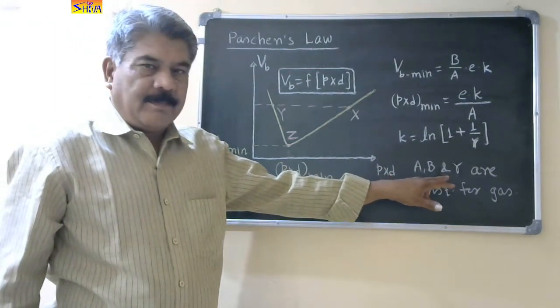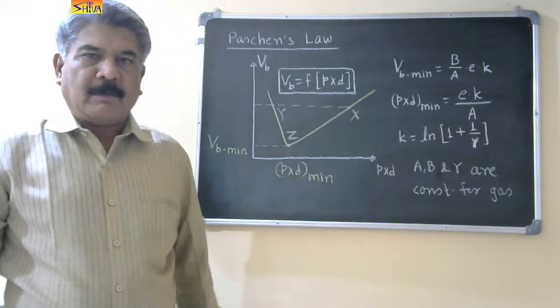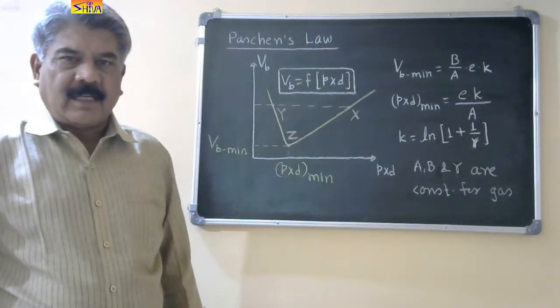So a, b and gamma, they depend on the nature of the gas. For air it will be different, for hydrogen it will be different, for carbon dioxide it will be different. Now let us take numerical.